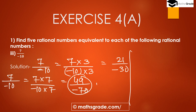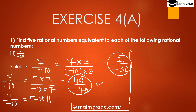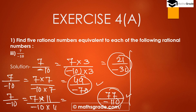That is an equivalent rational number of 7/(-10). For the third equivalent, multiplying by 11: 7×11 = 77 and (-10)×11 = -110, giving 77/(-110) as the equivalent rational number of 7/(-10).